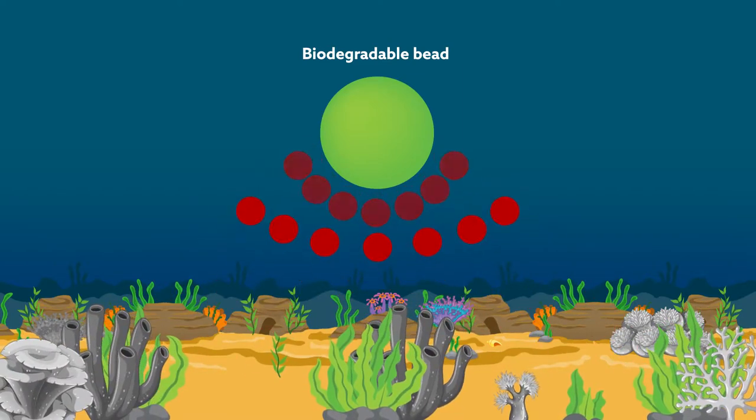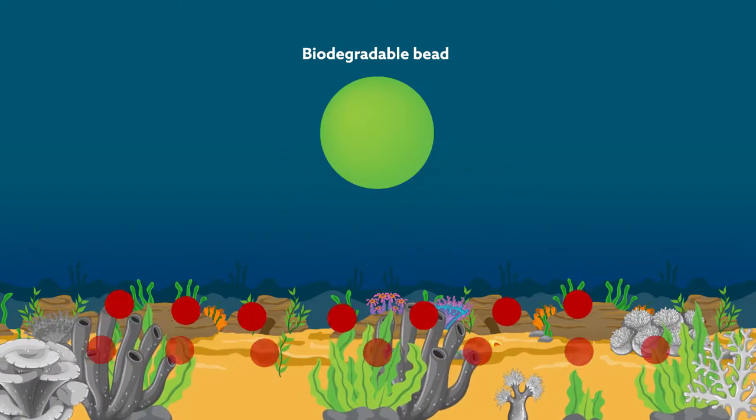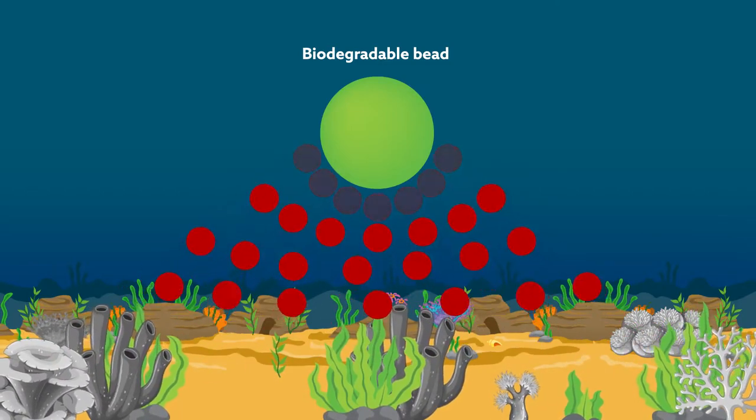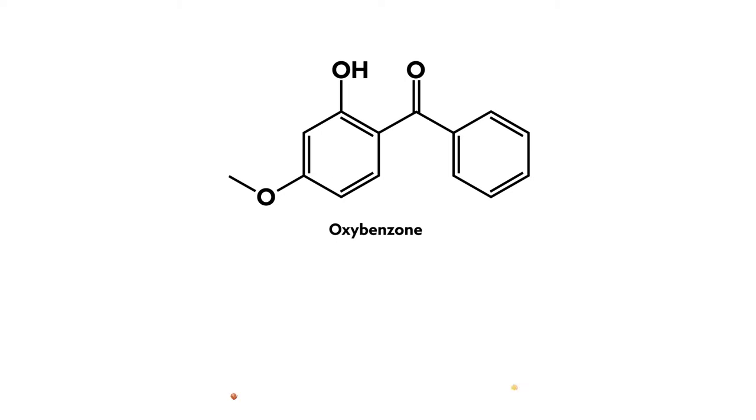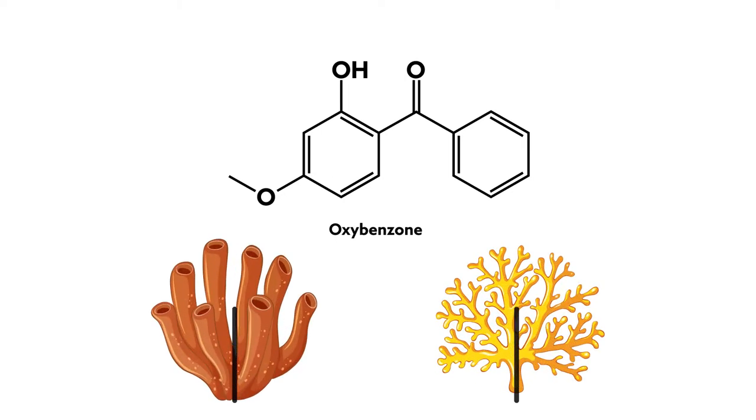The researchers are presenting their work at the 254th National Meeting and Exposition of the American Chemical Society. Oxybenzone is a common sunscreen ingredient that can cause coral bleaching.